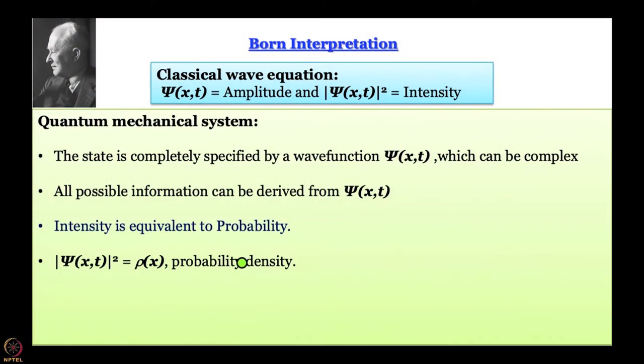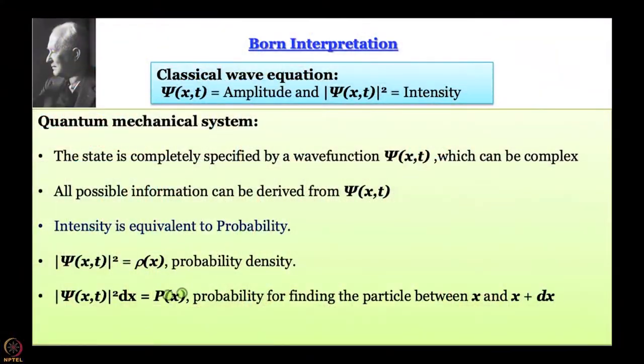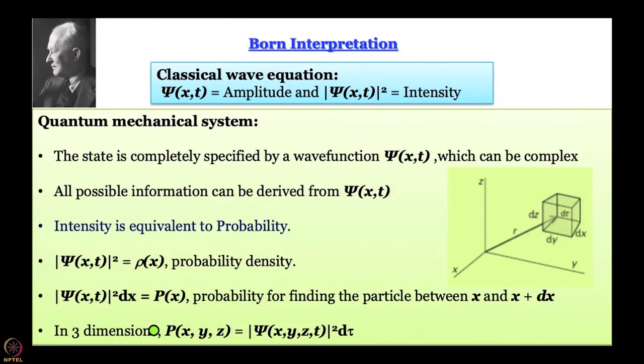If ψ is not complex then it is just ψ squared. It is also important to remember that |ψ|² is ρ(x), the probability density — it is not the probability itself. Because you cannot really talk about probability at a point; a point has no dimensions. When one wants to talk about probability one has to define a volume element. So the probability in one dimension is given by |ψ|² dx, and for a particular value of x this is the probability of finding the particle between x and x + dx.